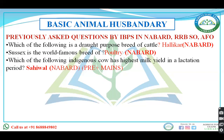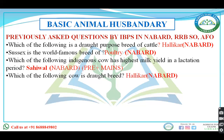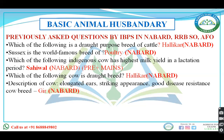They gave indigenous breeds in options and asked which indigenous cow has the highest milk yield in a lactation. The answer was Sahiwal, asked in both prelims and mains of NABARD. They also asked which cow is a drought breed — this question is repeated. One question described a breed with elongated ears and streaked appearance with good disease resistance — the answer was Gir.